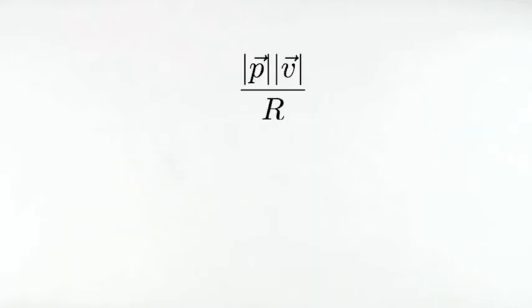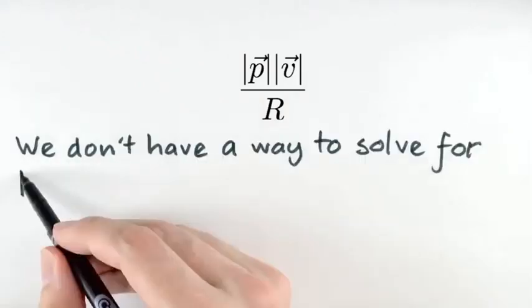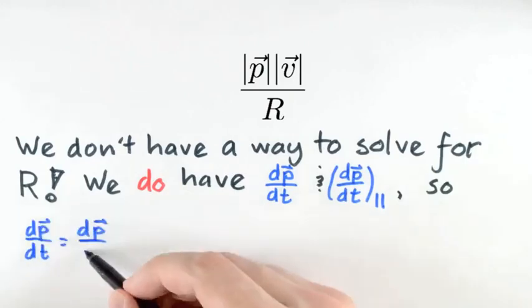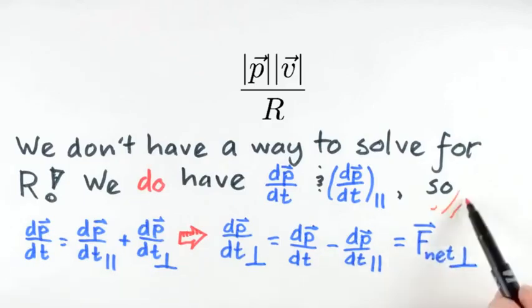Now if you selected an answer that uses this expression, that won't work because we don't have a way to find r, the radius of the kissing circle. Instead, our correct response uses the fact that we already have estimates for dp dt and dp dt parallel. And so, since the vector dp dt must be equal to the vector sum of the parallel and perpendicular parts, we use vector subtraction of quantities we know to obtain the unknown delta p over delta t perpendicular. And moreover, we use Newton's second law to link delta p over delta t perpendicular to f net perpendicular.